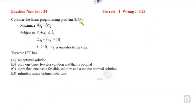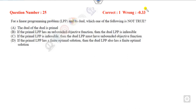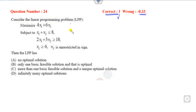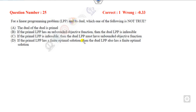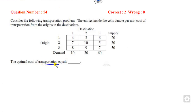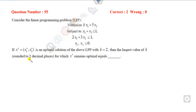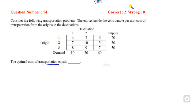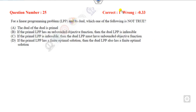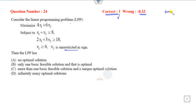Let us see what question 24 is. The second question is related to the primal and dual relationship. The first question is related to the optimal solution of LPP with unrestricted variables. Question 54 is related to the transportation problem where your target is to find the optimal solution. The last question is again related to the optimal solution of the LPP where you have to find certain unknown parameters k. You can get 2 plus 2, plus 5, plus 6 marks — so you will get 6 marks within a few minutes by understanding these techniques.